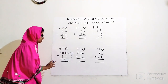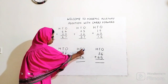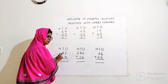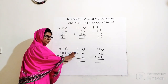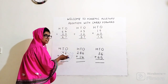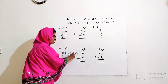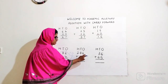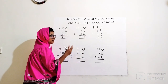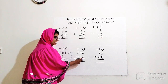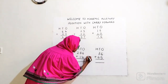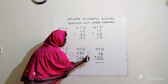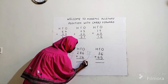Next example. H, T, O. 286 plus 14. This is the same as 86 plus 14 — I've just added 2 in the hundreds place to show what happens when carry forward takes place two times when there is a number below the hundreds place. Starting with ones: six plus four. Count after six additional four numbers: seven, eight, nine, ten. I'm getting a two-digit number, so I write ten on the side.